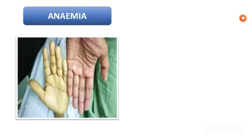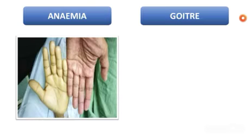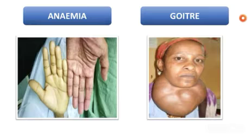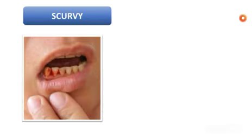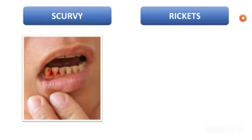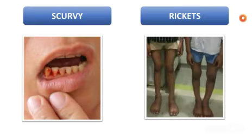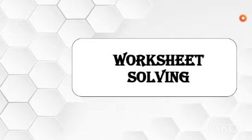We also saw deficiency diseases. Anemia is caused by lack of hemoglobin in the blood. Goiter is caused by deficiency of iodine. Scurvy causes your gums to bleed. Rickets is a condition in which the legs are very pale and thin and the bones are very soft and brittle.